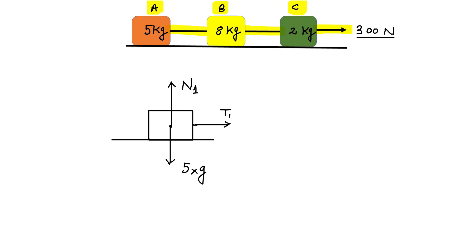How will you know the direction the string pulls? Imagine this string as a spring. If you apply a force here, the spring has a tendency to stretch. So this is a stretched spring. A stretched spring will try to pull on this side, and on block B it will try to pull the other side. So tension T1 on block A acts in this direction, and on block B it acts in the opposite direction. The magnitude is the same by Newton's third law — both are T1.